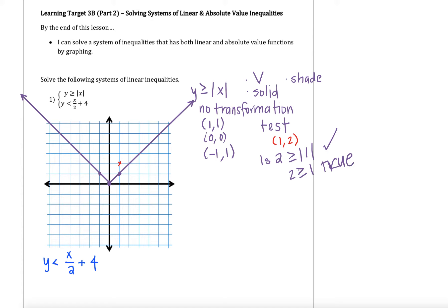So we're going to be shading inside this absolute value — shading on the pizza slice. Since this is a system of equations, my final answer is not just where the first one is shaded or where the second one is shaded, but where the two graphs overlap. Instead of making this very cumbersome right now, I'm just going to draw some arrows that represent where the shading would go — pointing inward, inside the absolute value.